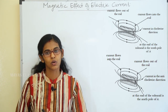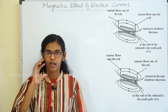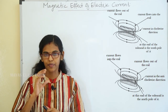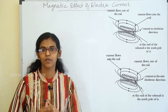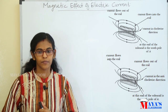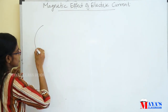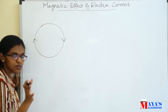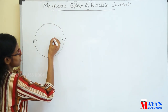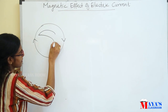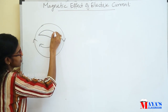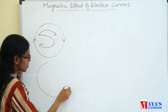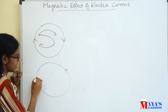If the current flow is going in the clockwise direction, that end will act as the north pole. If the current flow is going in the anticlockwise direction, that end will act as the south pole.